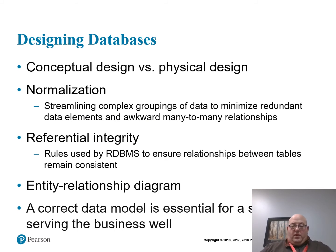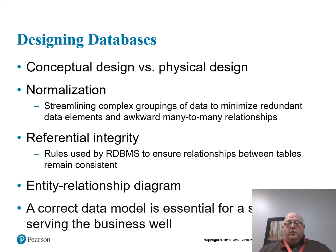How do we design databases? We first look at business processes and business rules — we need to know how end users do their job and how they want to view their data. After that, we build a plan, really a relationship diagram. From our business rules we get our entities and attributes. Then we look at how each table should relate to itself, normalize the database to minimize redundancies, and make sure we have referential integrity.